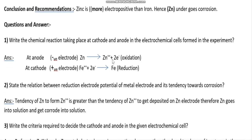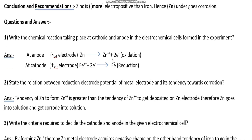Question and answer: write the chemical reactions taking place at the cathode and anode in the electrochemical cell formed in the experiment. At anode, an oxidation reaction takes place. At cathode, reduction takes place because iron accepts two electrons and gets reduced.